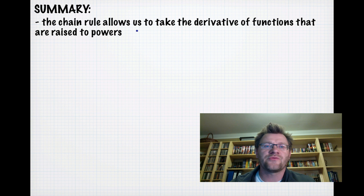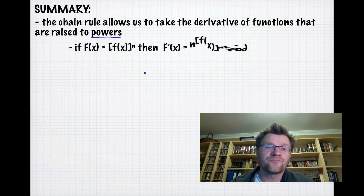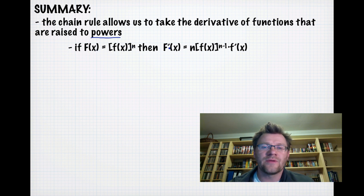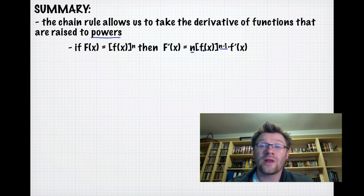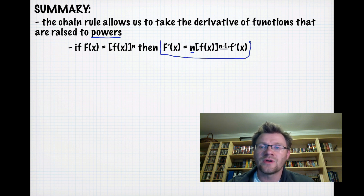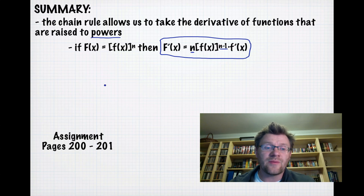In summary, the Chain Rule allows us to take the derivative of functions raised to a power. If our function equals a function raised to a power, the derivative is found by moving the exponent down in front, multiplying by whatever was in the brackets raised to n-1, and remembering to multiply by the derivative of whatever is inside the brackets. The assignment is on pages 200-201. Good luck and we'll see you in class.